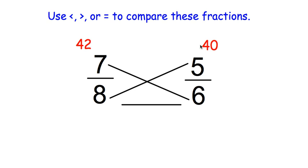We need to figure out which one of those numbers is larger. Obviously, it's 42. So 7 eighths is larger than 5 sixths.